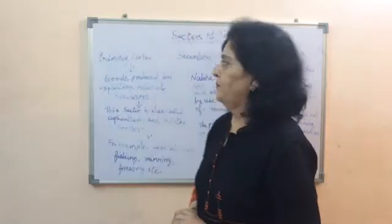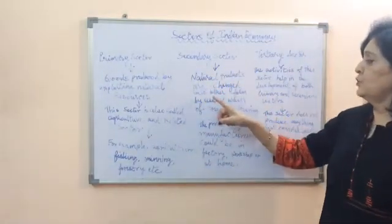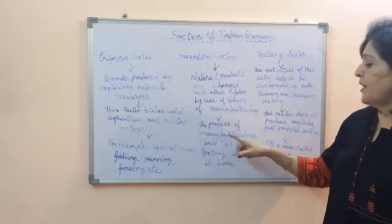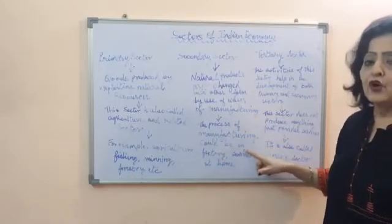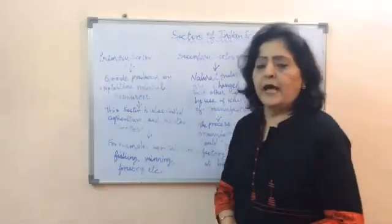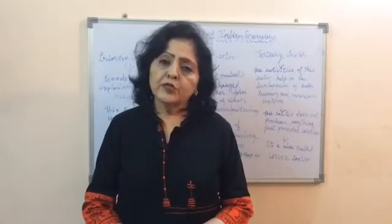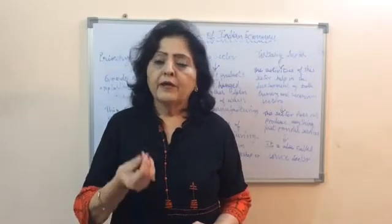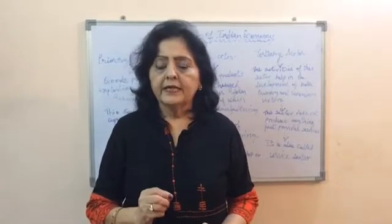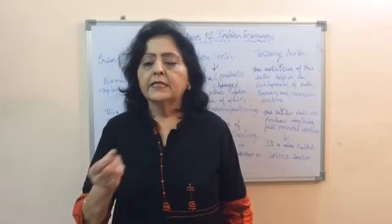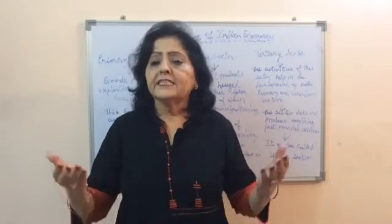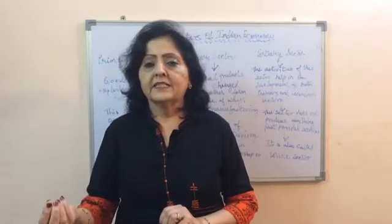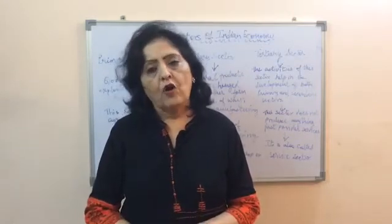In the secondary sector, natural products are changed into other forms by various ways of manufacturing. The process of manufacturing could be in a factory, workshop, or at home. For example, sugarcane which is produced in the agriculture sector is converted into sugar by the manufacturing process. Cotton, which is a primary product, is converted into cloth at various stages of manufacturing. This sector is related to various industries, so it is called the industrial sector.